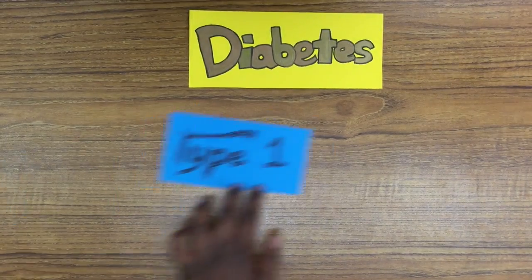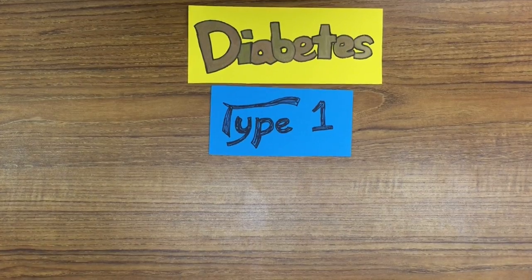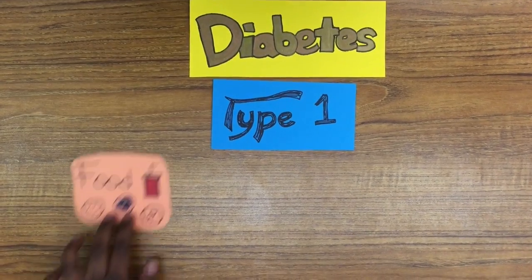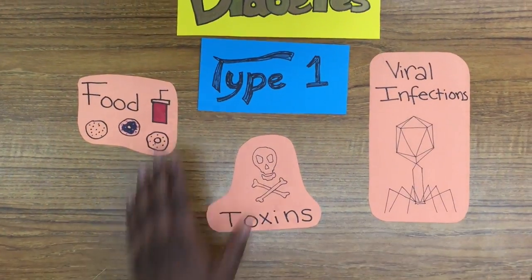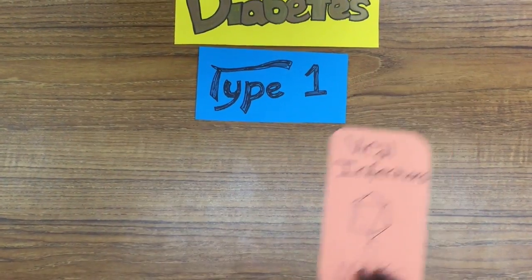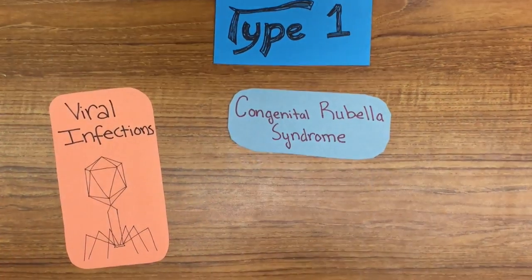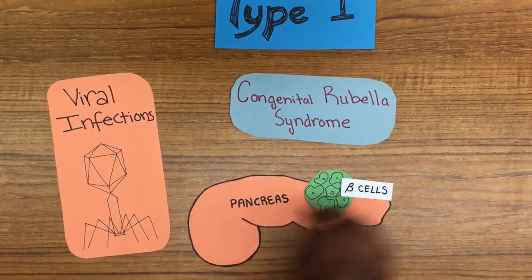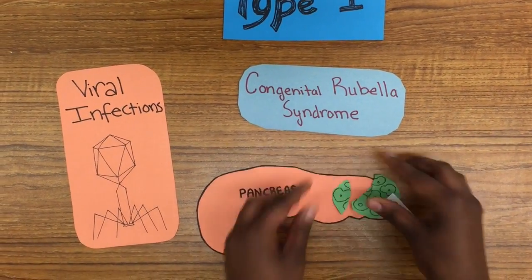Type 1 diabetes can be hereditary, but it can also be caused by environmental factors like food toxins or viral infections. It usually develops during winter as diseases like mumps and rubella are more prevalent. For example, congenital rubella is associated with beta cell destruction.